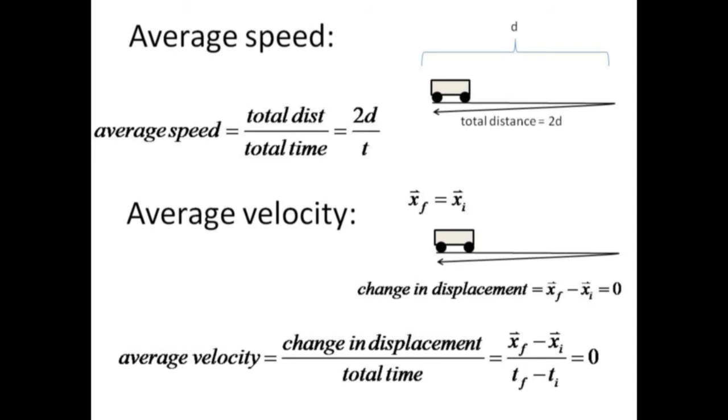Thus, a cart passing a certain point, traveling to the end of the cart and returning to the same point, has an average speed given by twice the one-way distance divided by the time interval.